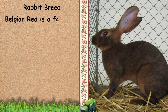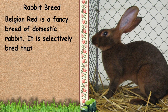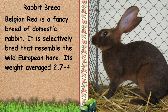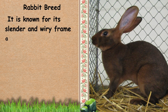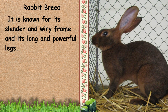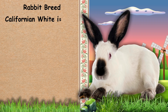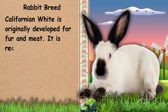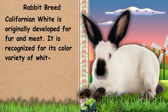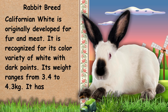And for the rabbit breed. First, we have Belgian Hare. Belgian Hare is a fancy breed of domestic rabbit, selectively bred to resemble the wild European hare. Its weight averages 2.7 to 4.1 kg. It is known for its slender and wiry frame and its long and powerful legs. Next, we have Californian White. Californian White was originally developed for fur and meat. It is recognized for its color variety of white with dark points. Its weight ranges from 3.4 to 4.3 kg and it has dense, plush coats.